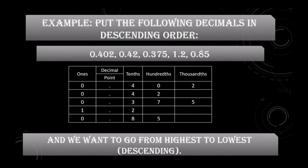Same example — put the following decimals in descending order: 0.402, 0.42, 0.375, 1.2, and 0.85. We will arrange them in the table like this.